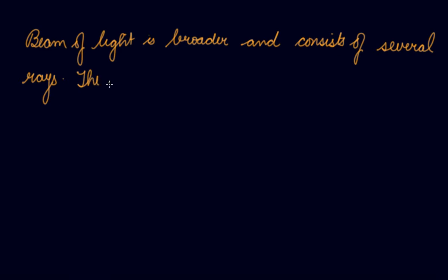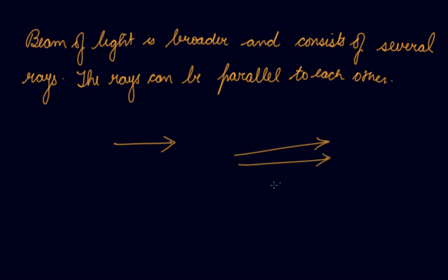The rays can be parallel to each other. Now if a very small source of light is used, the ray will go outwards. Now this is, I told you, is a ray whereas this, a group of rays is known as your beam. This is a beam and this is a ray.